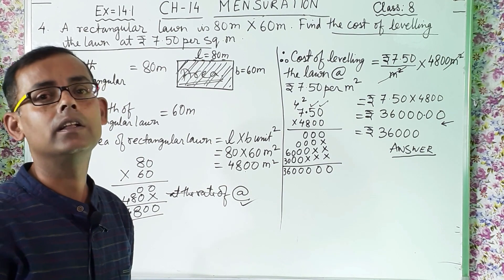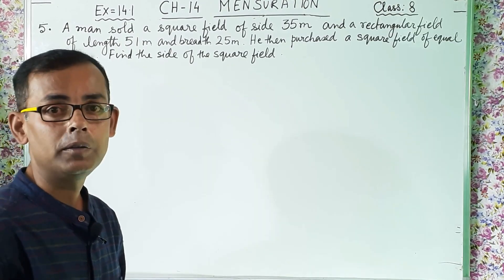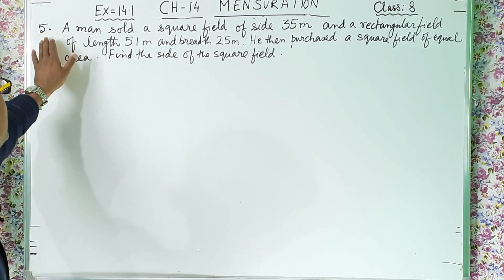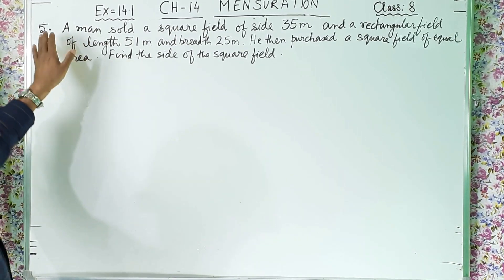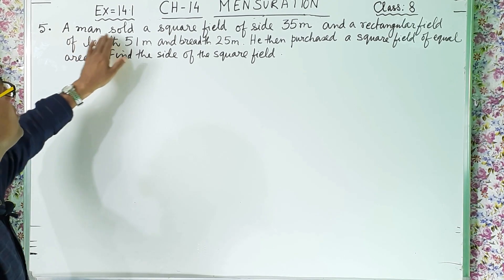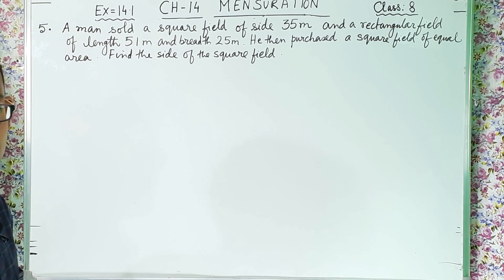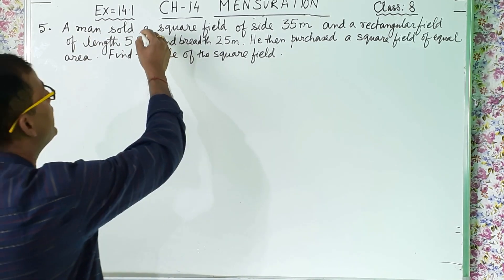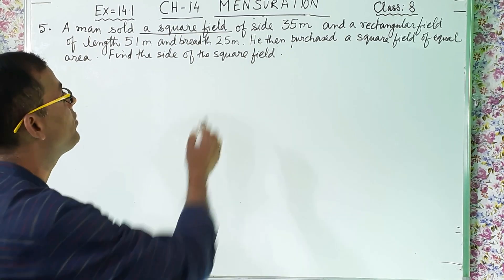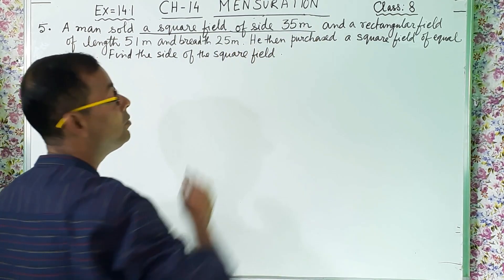I hope you have understood sum number 4 nicely. Now keep on practicing and we will move on to the next sum. Question number 5 — let us see what they are asking us. A man sold a square field of side 35 meter.